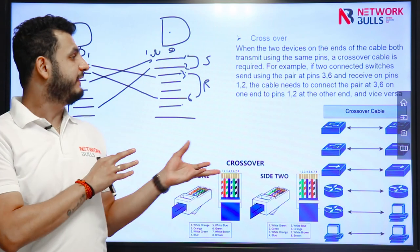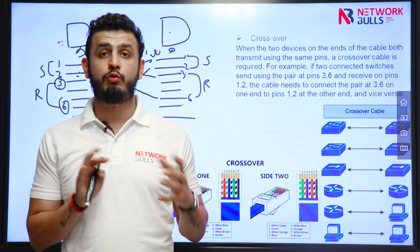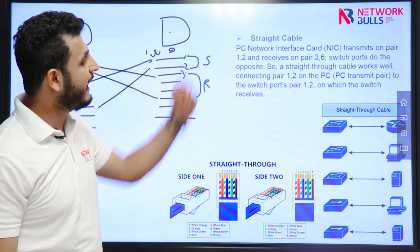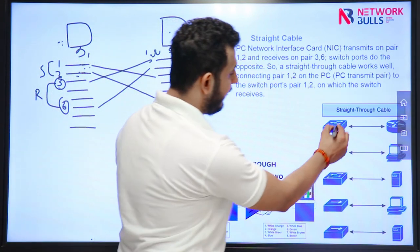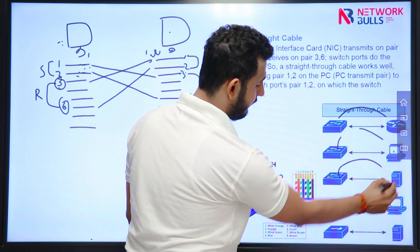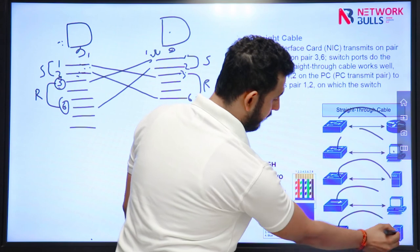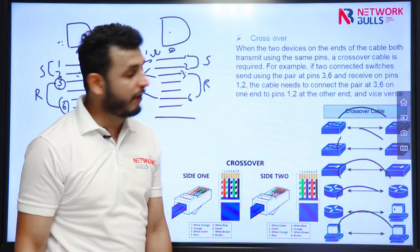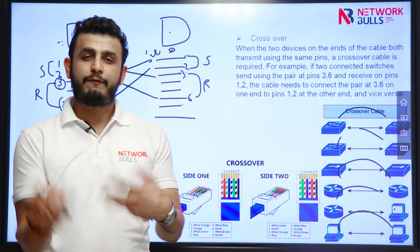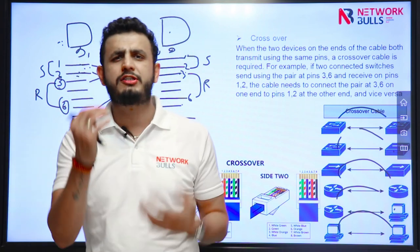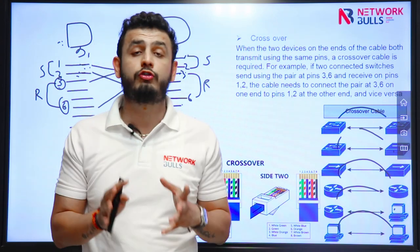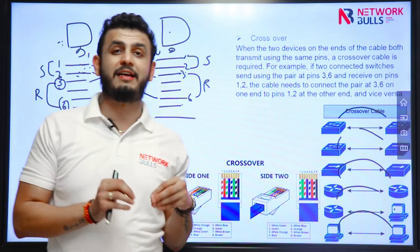These are the types of cables used in real-time scenarios. For straight cables, you always have different types of devices on each end. For crossover cables, you are connecting the same type of devices. If the sending and receiving logic is the same on both sides, use a crossover cable. If it is different, use a straight cable. Thank you.